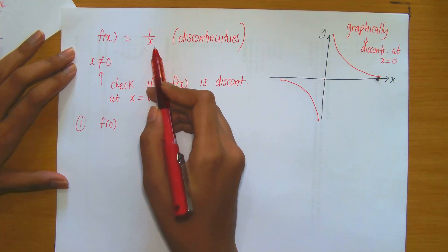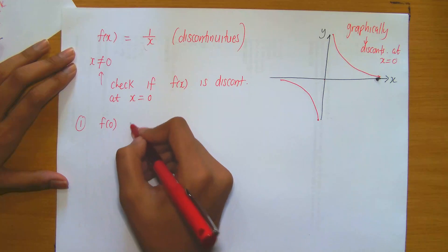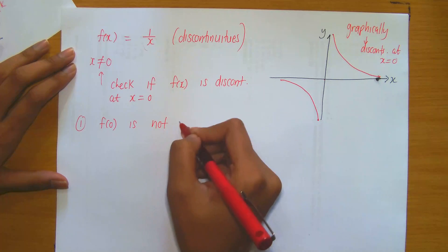1 is to find out what is f at 0. And observe that f at 0, since we cannot plug in 0 in the denominator, is not defined.